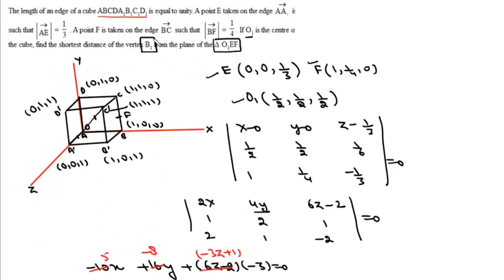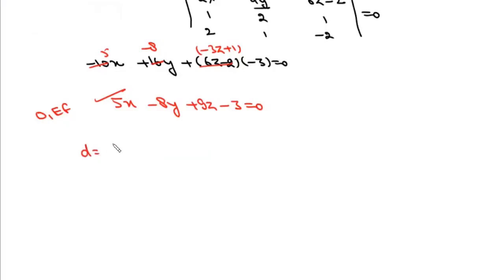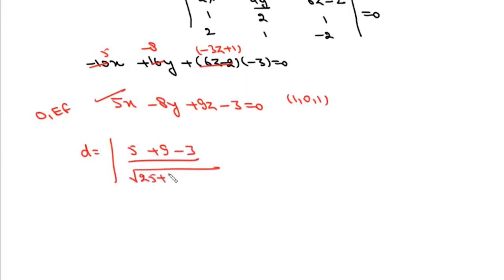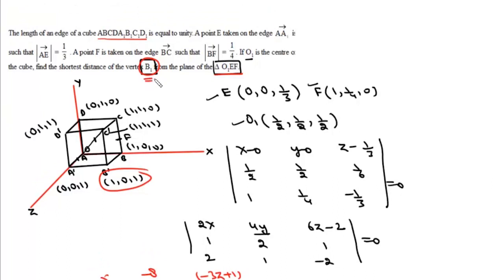The perpendicular distance calculation: |5(1) - 8(0) + 9(1) - 3| / sqrt(25 + 64 + 81) = |5 + 9 - 3| / sqrt(170) = 11/√170. Therefore the shortest distance of vertex B1 from the plane through O1, E, F is 11/√170.